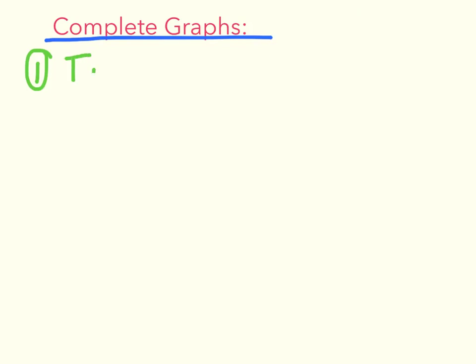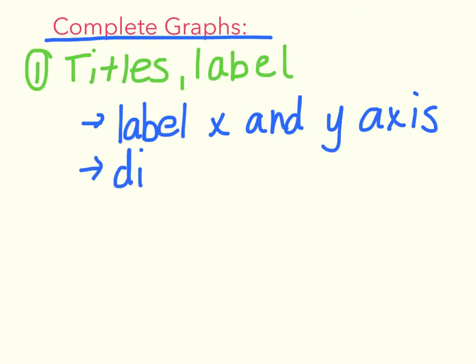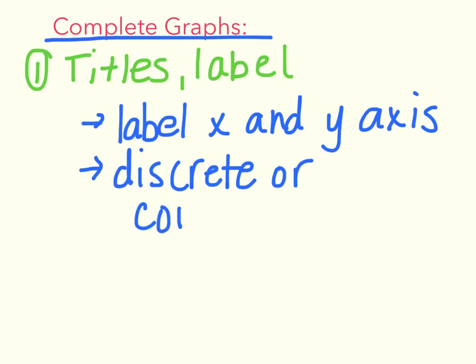Now that I've shown you what all needs to be in a complete graph, let's write these down — you do need to take notes. Complete graphs need a few things. First, if you're making a graph dealing with a situation — like t-shirt sales or miles run — you need titles and a label. You also always need to label the x and y-axis. Then you need to decide if the graph is discrete or continuous, and connect the line if it is, or leave it unconnected if it's discrete.